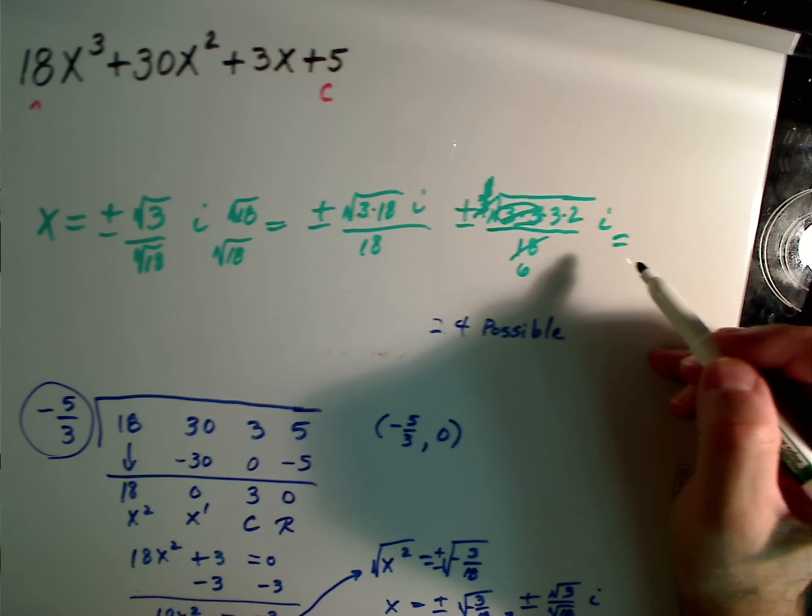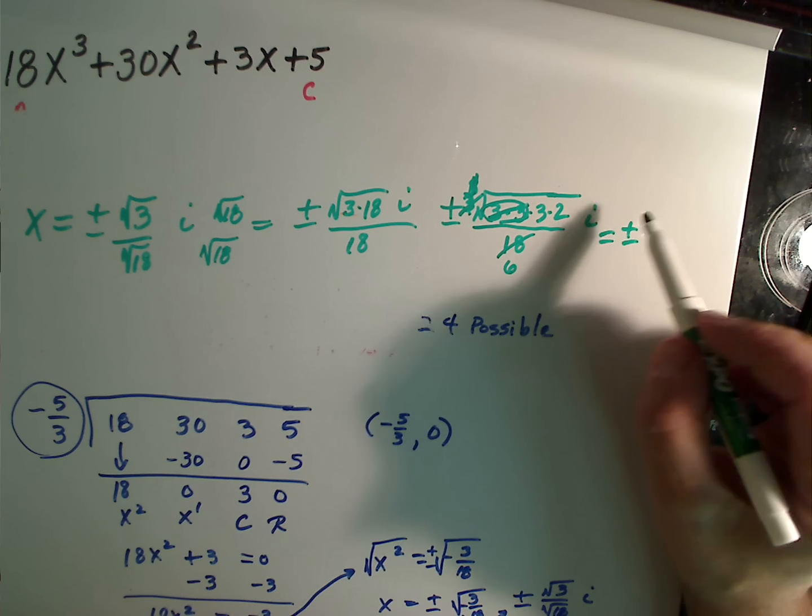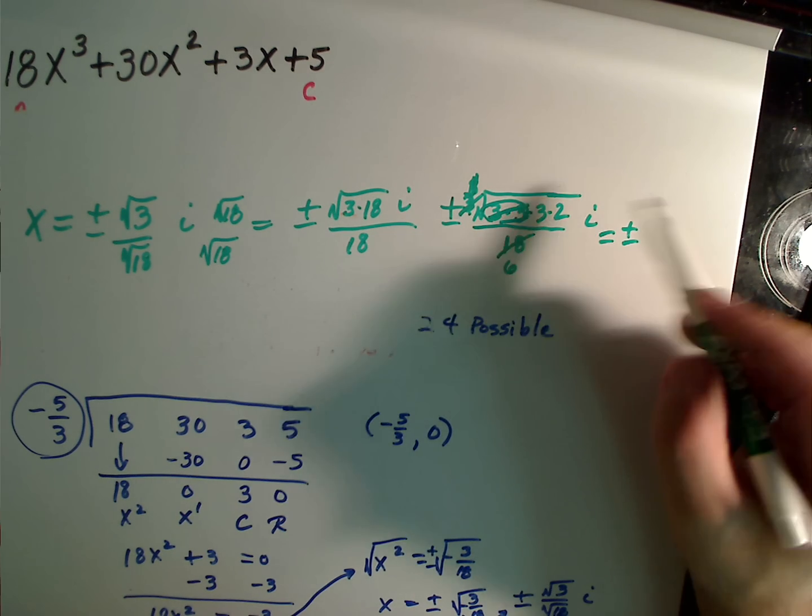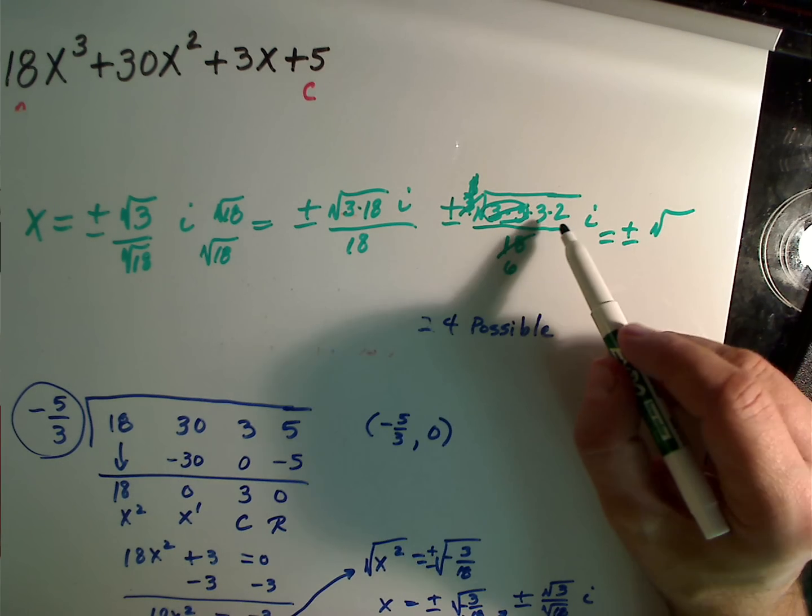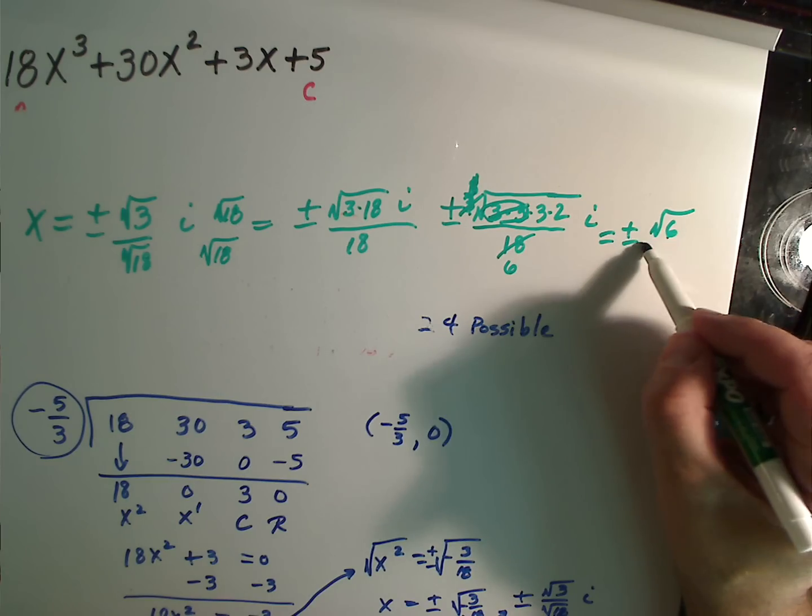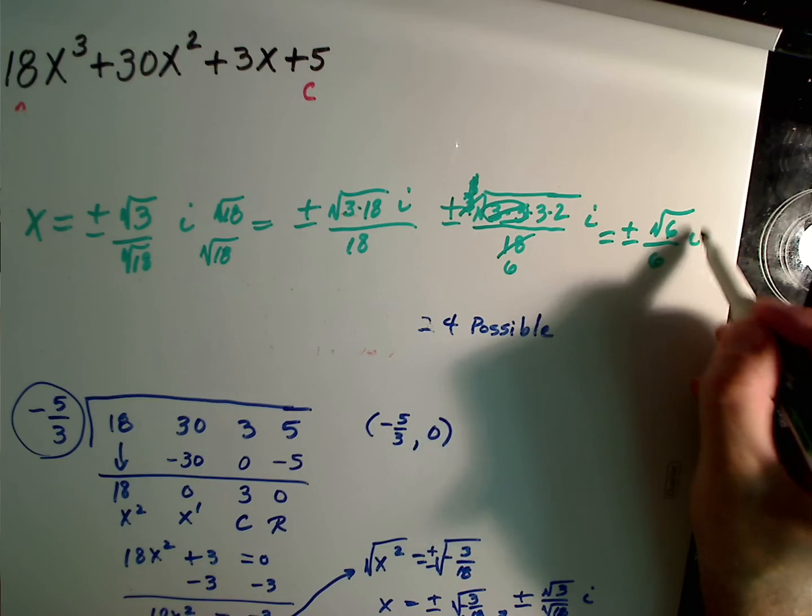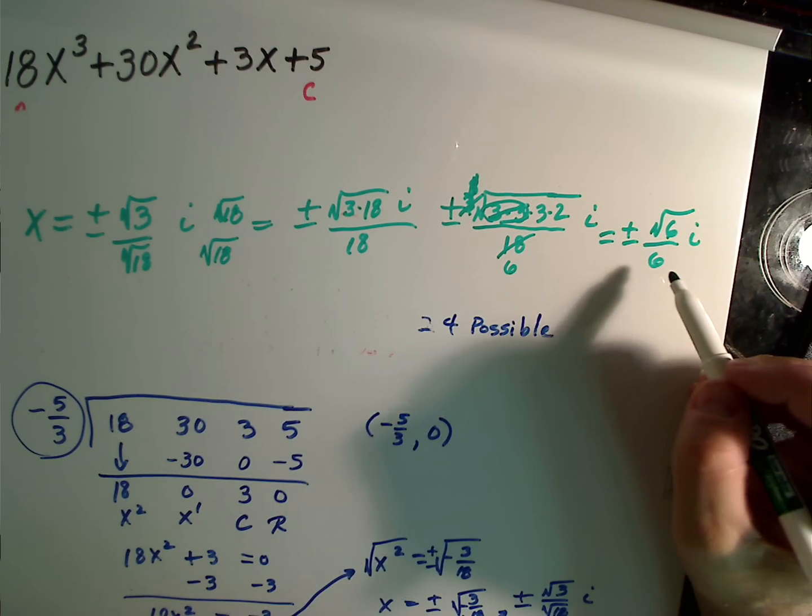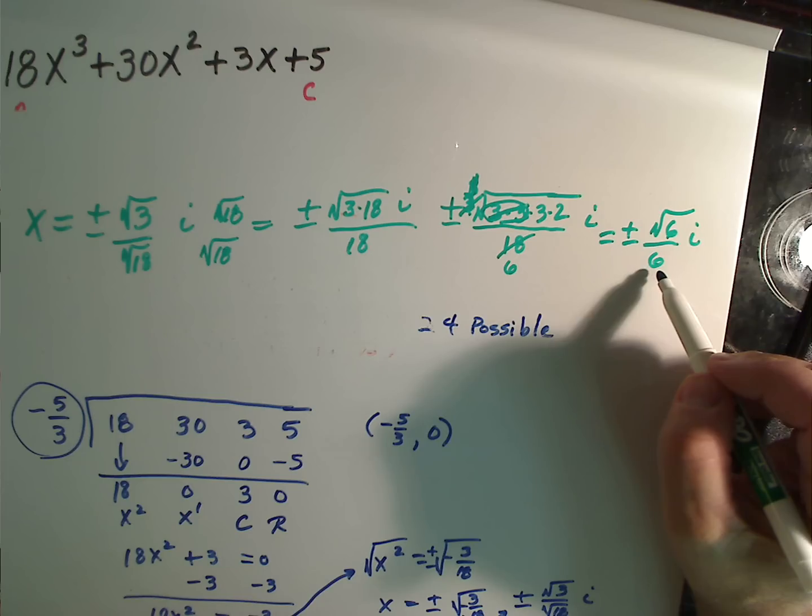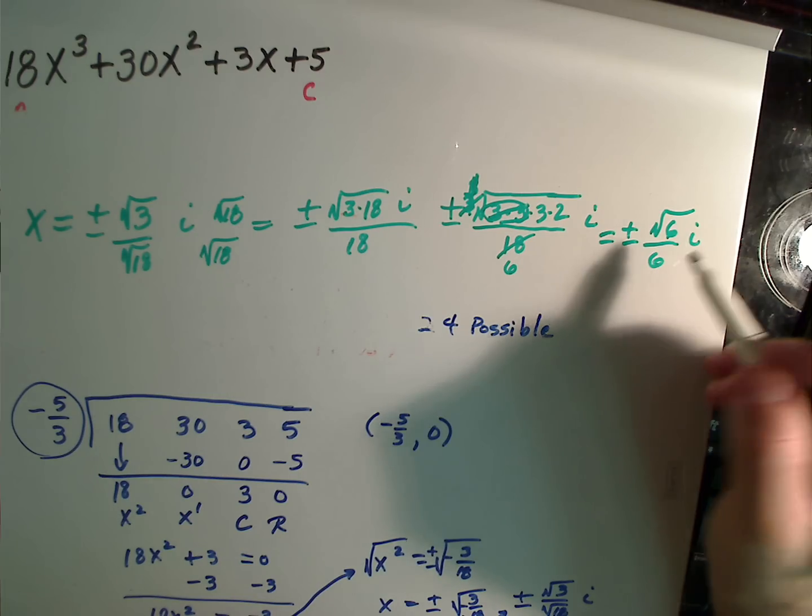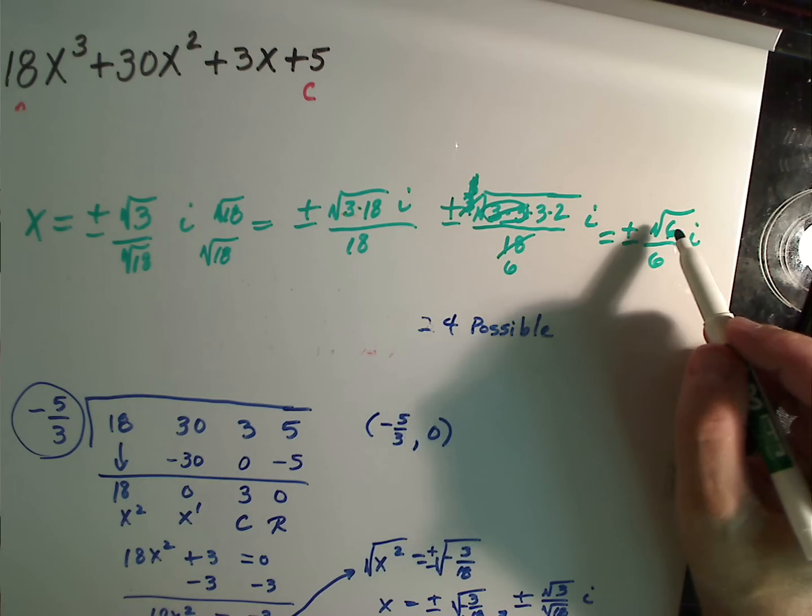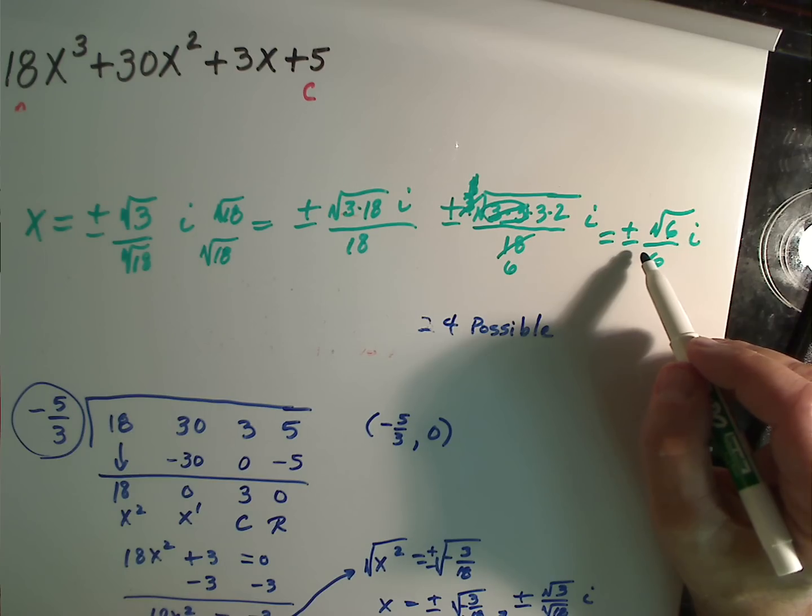So, what I end up with is plus or minus, that's 1, square root of 3 times 2, which is 6, over 6, i. It's been rationalized because I have a rational number on the bottom, simplified, and those are my remaining two roots.